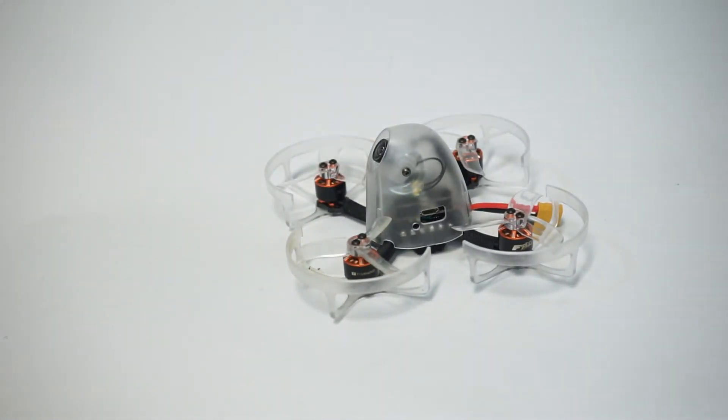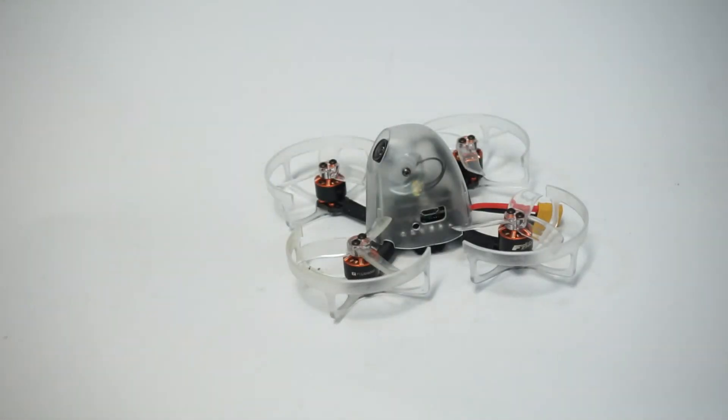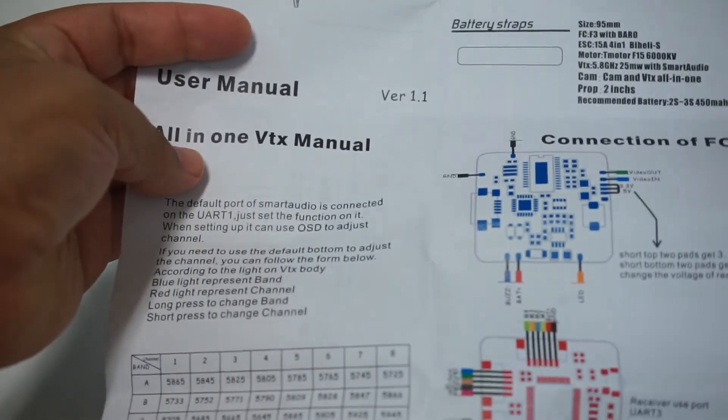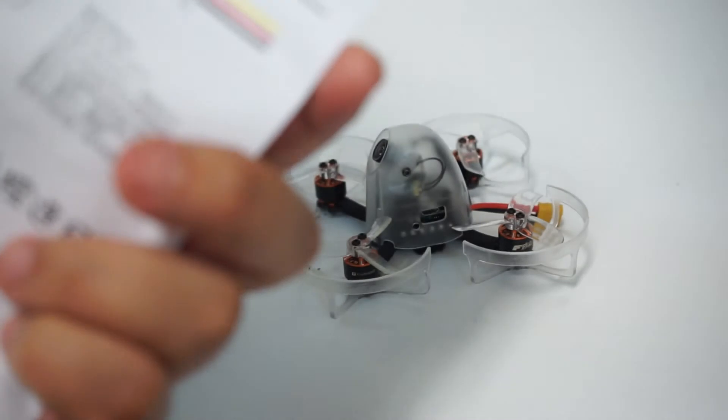and if you look at the instruction manual that comes with it I believe this tells you how to switch everything to those colors. So it gives you the board layout which is really cool. A lot of the instructions are in a different language so that's interesting but very cool. It tells you how to operate the VTX which is pretty standard.